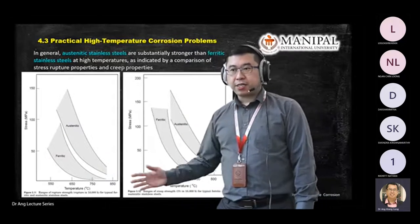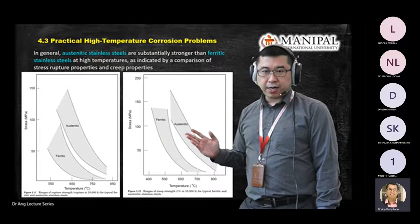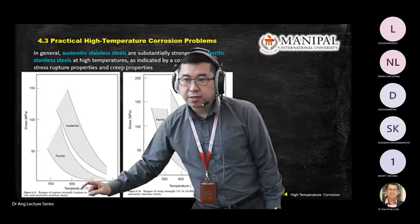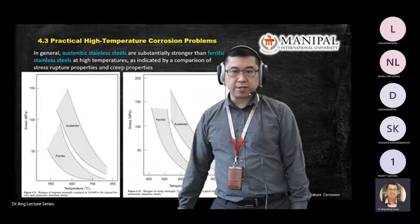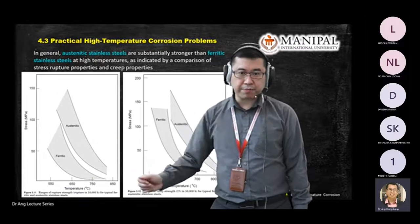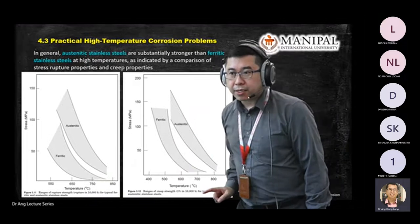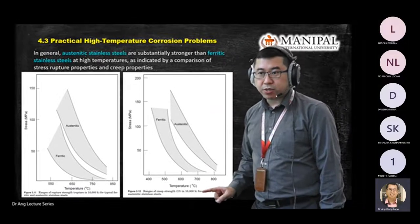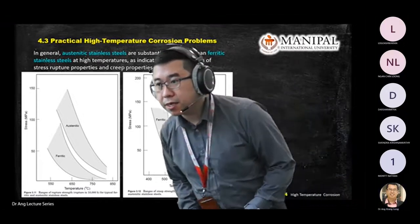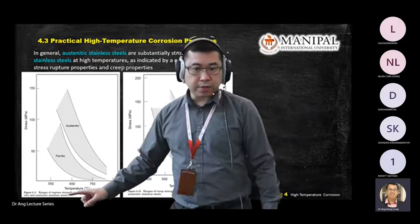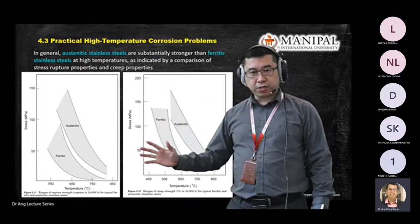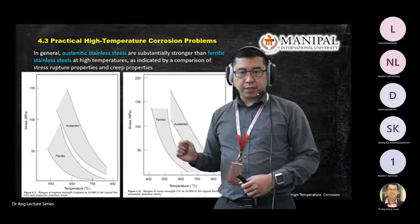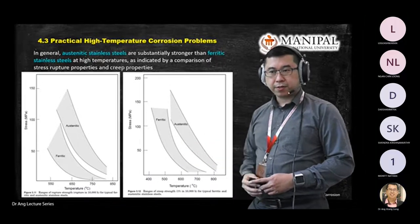Another chart shows the comparison between ferritic and austenitic — one graph is rupture strength under stress analysis, and the other is a creep test. This data was captured within a 10,000-hour test. These are the differences in data between ferritic and austenitic. One graph is rupture, one is creep properties.